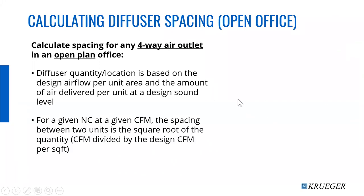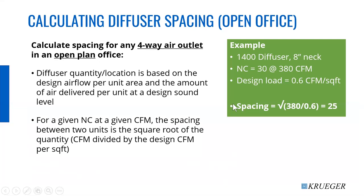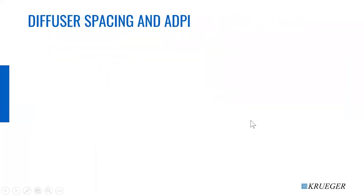You say, how can it be that simple? Well, we take a 1400 diffuser with an eight-inch neck and an NC of 30, which is 380 CFM. Divide that by 0.6, you get 600-something. Take the square root of that, you get 25. That's how far apart the diffuser should be to get 0.6 CFM per square foot. Pretty simple. If you do the math, you may find sometimes you get 24, sometimes 26 instead of 25 — that's close enough.